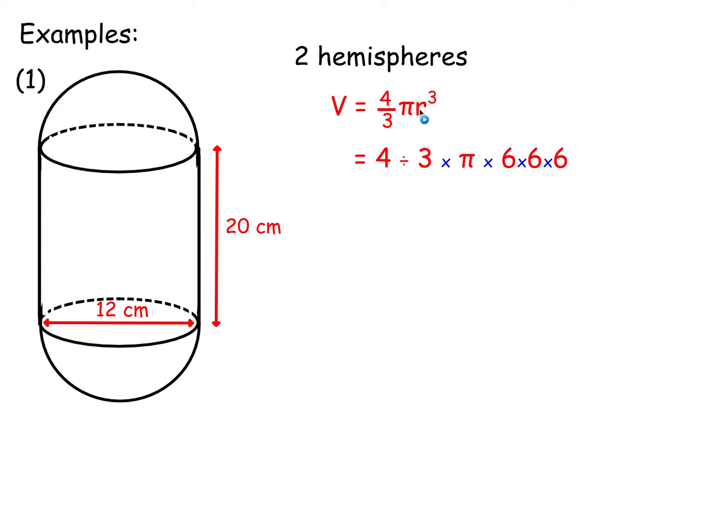And again, you can put in 6 cubed in the calculator. Or as I've done it here, just written in the multiplication as the three numbers being multiplied. I'm going to leave this as a multiple of pi. So I'm going to get 6 times 6 times 6 times the 4 and divide it by 3. And leave it as a multiple of pi. It's 288 pi. So that's the exact answer.